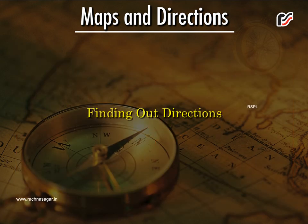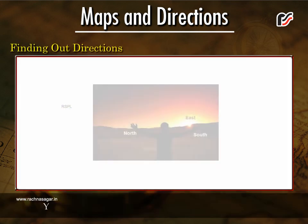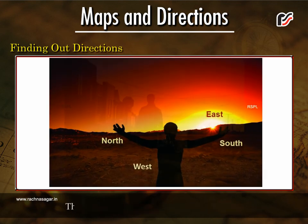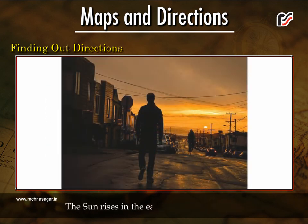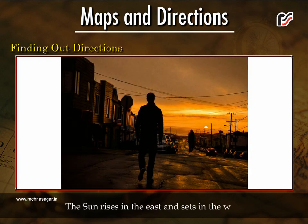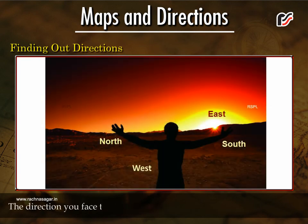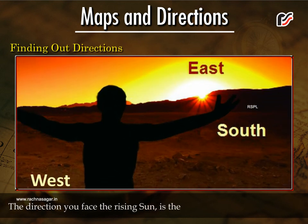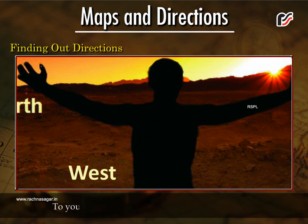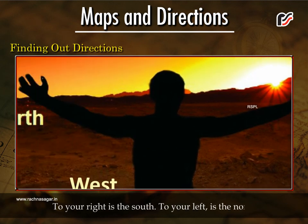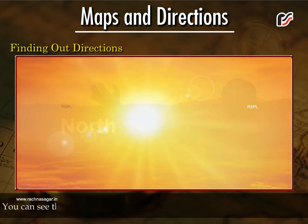Finding Out Directions. You can find out the directions with the help of the sun. The sun rises in the east and sets in the west. The direction you face the rising sun is the east. At your back is the west. To your right is the south. To your left is the north.